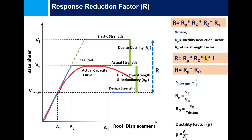The redundancy and damping reduction factors are included in the over-strength section and are generally taken as 1 in different codes. So summarizing, R equals the multiplication of Rμ (ductility reduction factor) and the over-strength factor. For the displacement part, ductility is given by the displacement at the ultimate state divided by the yield displacement.